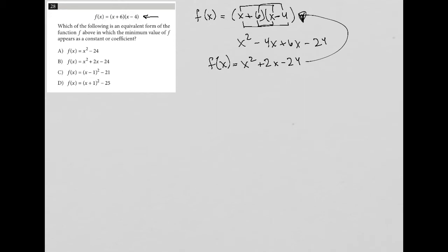Let's read the question: which of the following is an equivalent form of the function f above in which the minimum value of f appears as a constant or coefficient?